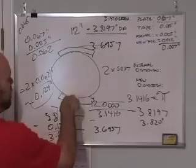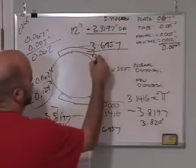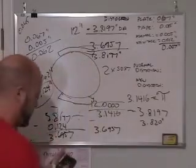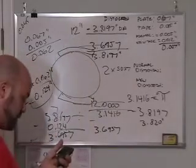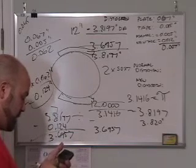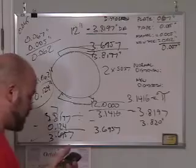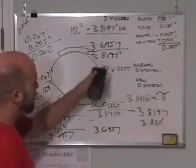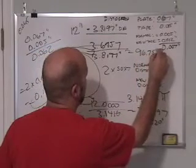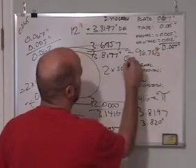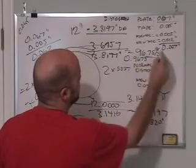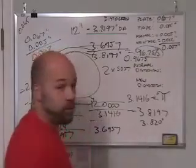divided by 3.8197 inches, the greater print diameter. Let's see what we have for distortion. 3.6957 divided by 3.8197 equals... All right, so this equals 96.75 percent. It actually equals 0.9675, or 96.75 percent is your distortion factor.